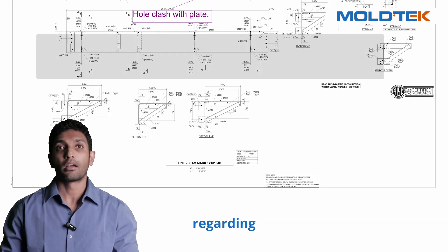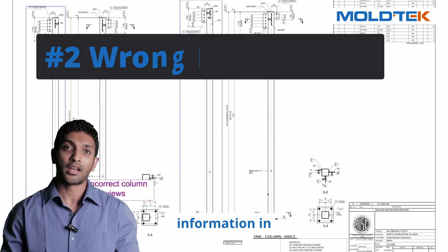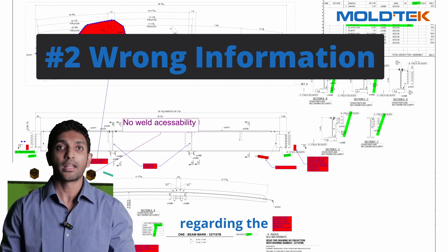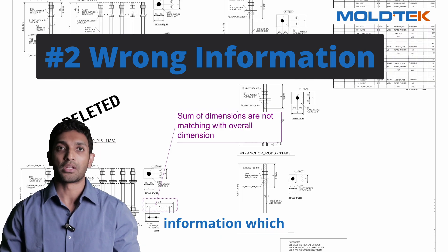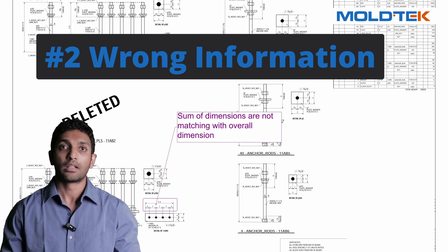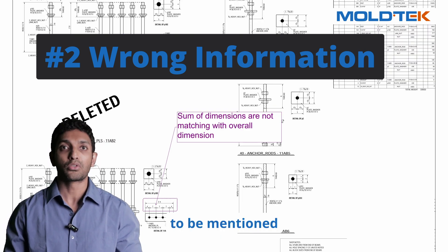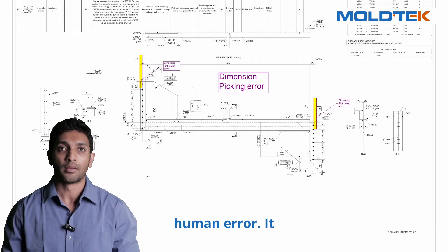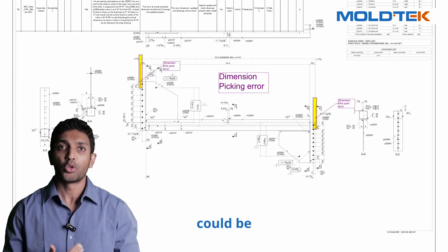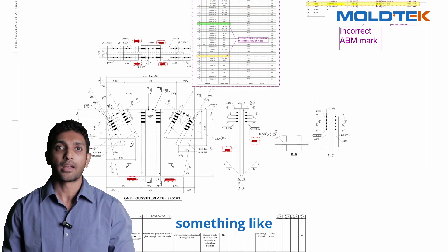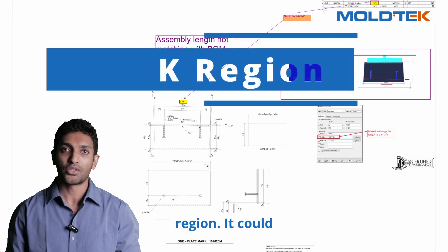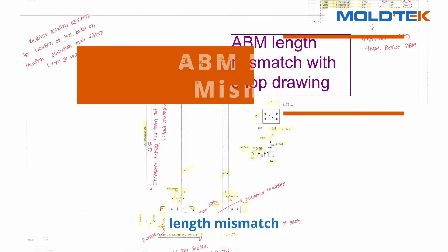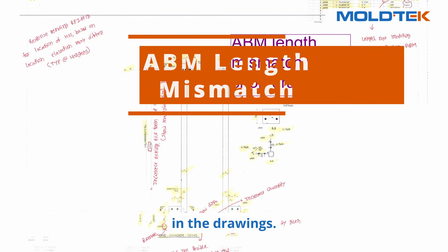The second aspect regarding information in the drawing is wrong information, which typically tends to be mentioned sometimes out of human error. It could be something like wrong information in the K region, or it could be about the ABN length mismatch in the drawings.